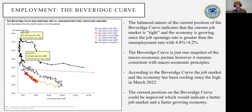The Beveridge curve is a great indication of the consequences of contractionary monetary policy. While the current job market is tight and the economy is growing, the job opening rate is greater than the unemployment rate at 4.8% versus 4.2%. It is not at the same highs as March 2022, when the job opening rate was at 7.4% and the unemployment rate was at 3.6%.